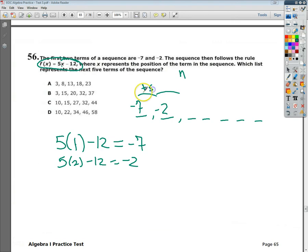You would add 5 to get from negative 7 to negative 2, so you just add 5 more and get 3. Then you'd add 5 more and get 8. Then you'd add 5 more and get 13. Then add 5 more and get 18. Then add 5 more and get 23.